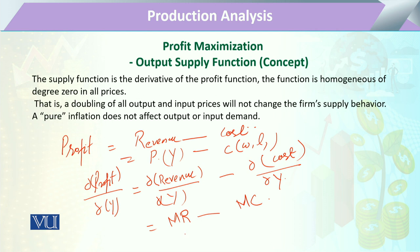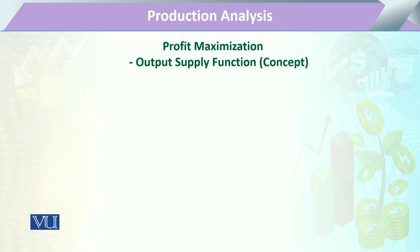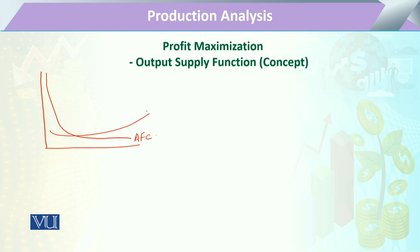For profit maximization, the condition that marginal revenue equals marginal cost enables any firm working in a competitive market to have a supply function. Graphically, we can derive this using the average fixed cost curve, average variable cost curve, average cost curve, and the marginal cost curve. The marginal cost curve intersects the average cost curve at the point where average cost is at its lowest value.